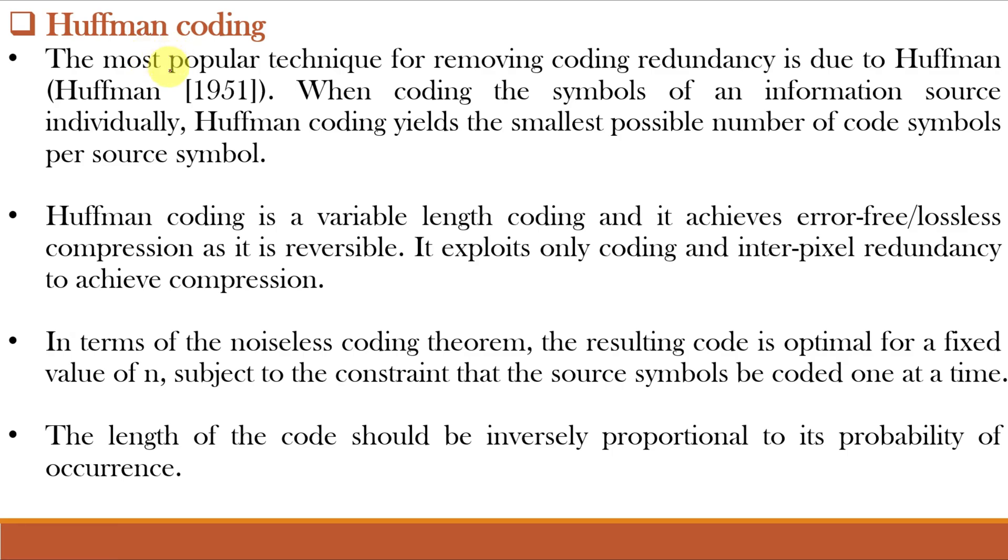Huffman coding was derived by David Huffman in 1951, and hence the name Huffman coding is given to his technique. Huffman coding is a variable length encoding procedure, where rather than using the 8-bit code, we use different length codes. Huffman coding gives the smallest possible number of code symbols. It gives error free or lossless compression as it is reversible. As we saw in the 36th video class, for Huffman coding, the length of the code should be inversely proportional to its probability of occurrence. That means the symbols that occur more often will have shorter code words. Also the two symbols that occur least frequently will have the same length.